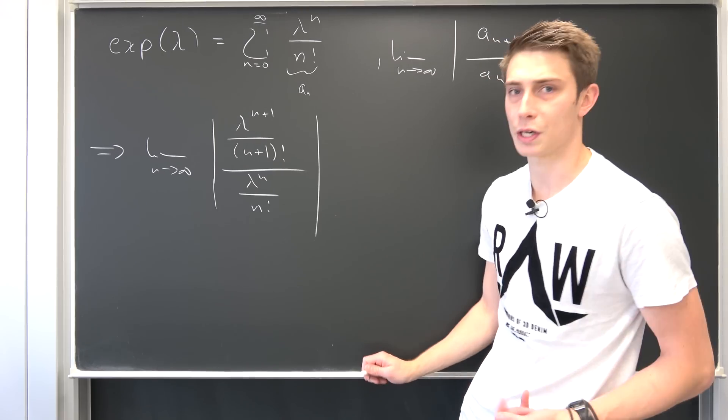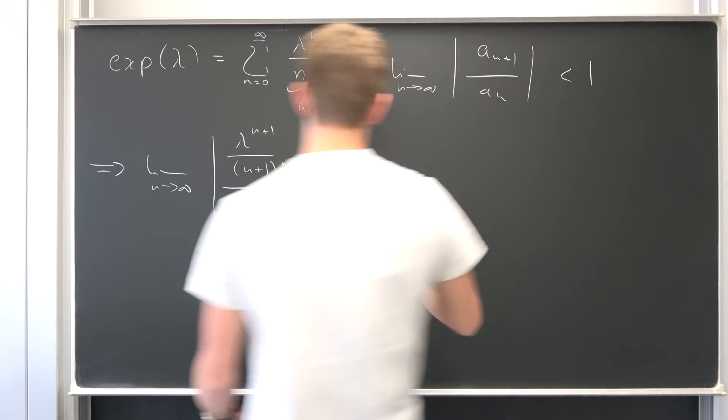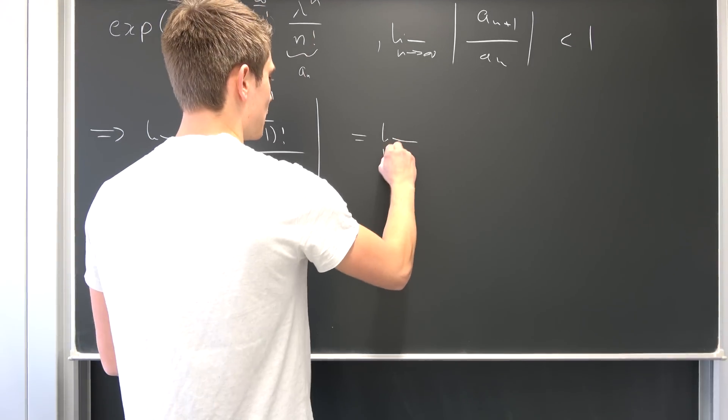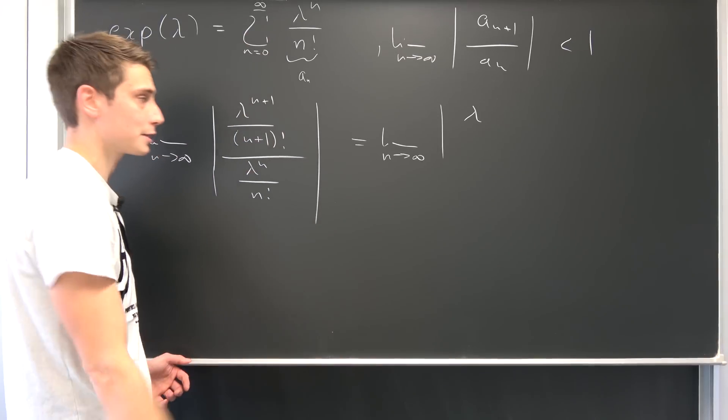So this looks quite like a mess, but everything is going to cancel out quite nicely. So this and that is going to cancel out to lambda to the first power. So that's the limit as n approaches infinity of the absolute value of just lambda to the first power. This is just lambda.